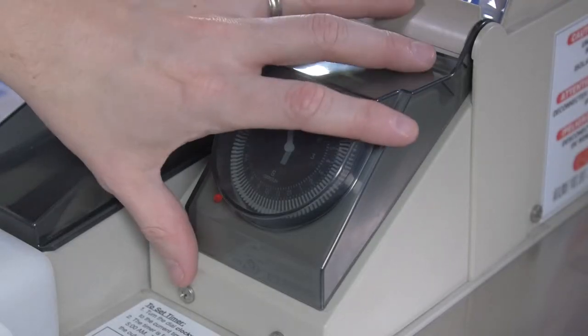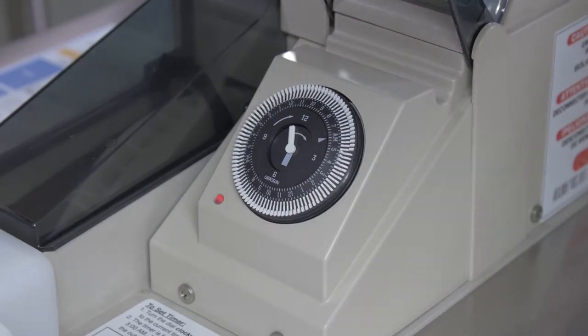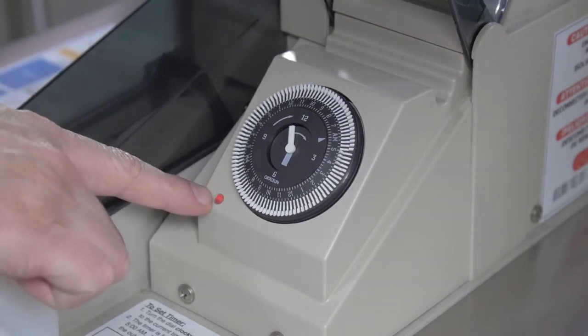Before setting the analog timer, confirm the unit is powered by checking the power indicator light, which is located to the lower left of the timer and will illuminate if power is being fed to the unit.